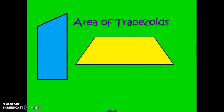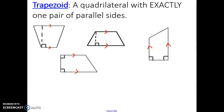In this video we'll be learning how to find the area of trapezoids. A trapezoid is a quadrilateral, or four-sided figure, with exactly one pair of parallel sides — sides that would never touch if we were to extend them.